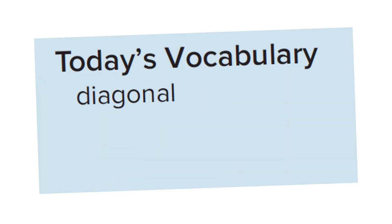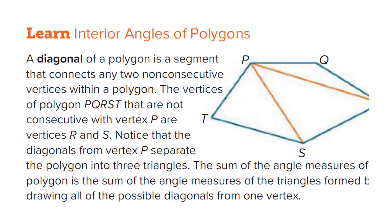Our vocabulary word would be diagonal of a polygon and we are going to define it in this way. A polygon, if it has a diagonal, the diagonal of the polygon is a segment that connects or joins any two of the non-consecutive vertices within a polygon. So if this is a polygon P, Q, here it is R, I will write S, T, P. This is a polygon.